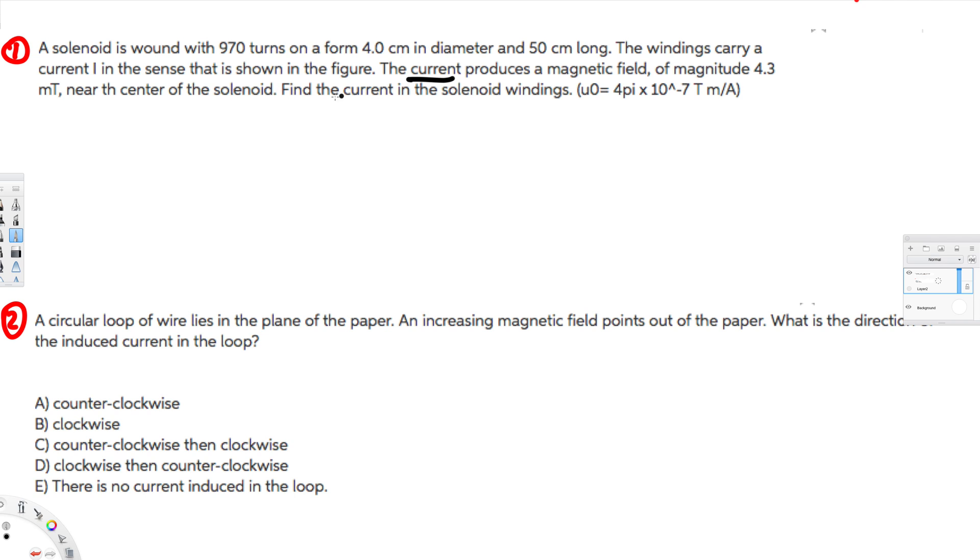We can use this equation: B equals μnI. This is the permeability constant, this is turns per length, and this is current. The question is asking for the current, so we can rearrange this equation to find the current: I equals B over μn.